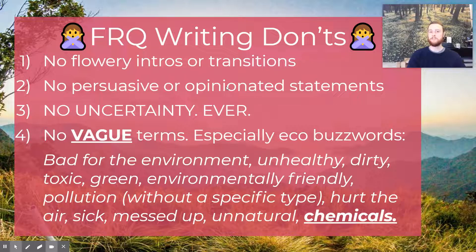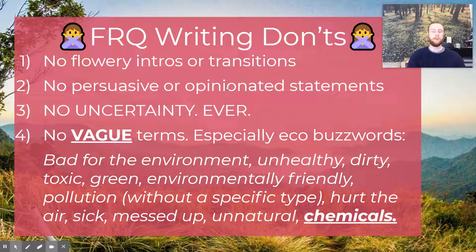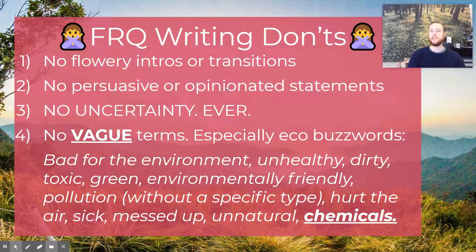It is environmental science, not environmentalism. We really need to stick to objective scientific facts and ideas. Never use vague terms — this is probably the Achilles heel of APES students every single year. We use terms that we hear in the media or in everyday life: things like 'bad for the environment,' 'unhealthy,' 'toxic,' 'green,' 'unnatural.' These mean nothing in AP Environmental Science and will never earn you points. We have to be really clear and concise and use APES vocabulary. In the next section, we'll go over what you can replace these common language terms with so that your FRQs will be solid and earn you points.